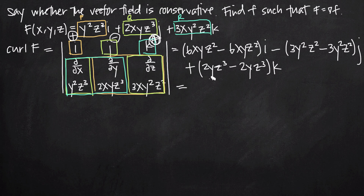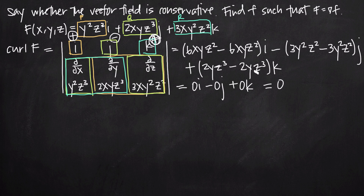Simplifying the right-hand side: 6xyz² − 6xyz² = 0, so we get 0i. Then 3y²z² − 3y²z² = 0, giving −0j. And 2yz³ − 2yz³ = 0, giving +0k. This vector 0i − 0j + 0k is the zero vector, equal to 0. We've shown that the curl of F equals 0, and therefore F is conservative.